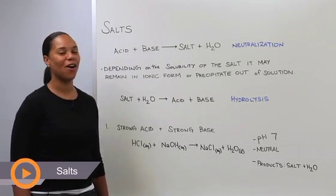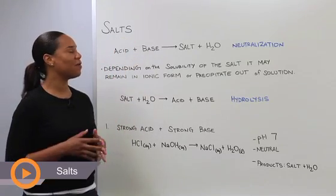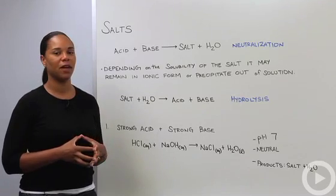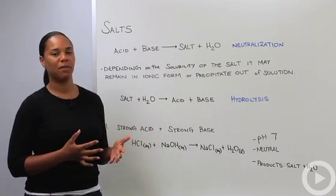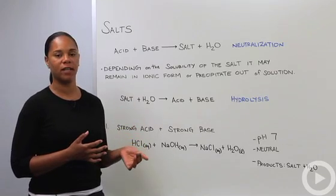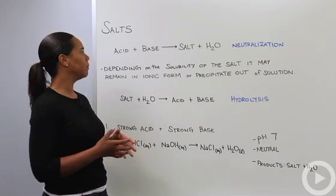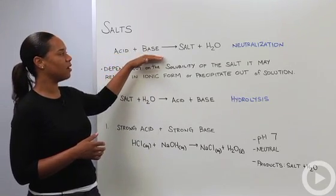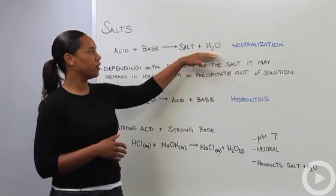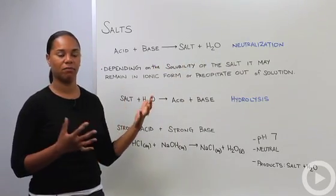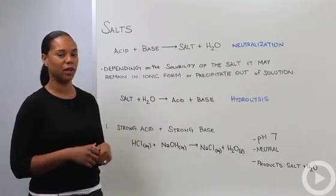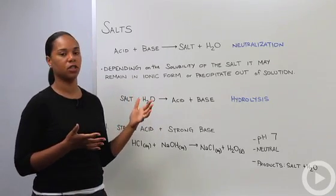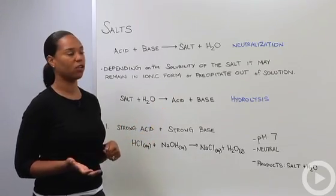Let's talk about salts. This comes up when thinking about acid-base reactions. The most basic thought about an acid-base reaction is that the driving force for it is the production of water. When you have an acid and a base, what you get is a salt and water — a salt meaning an ionic species, similar to table salt, sodium chloride, which in aqueous solution gives sodium ions and chloride ions.